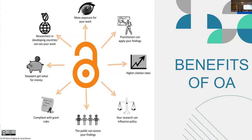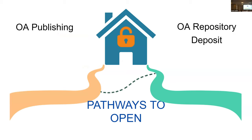Hopefully by now I've convinced you that open access is a good thing to participate in. There are two main pathways to make your work openly available: open access journal publishing and open access repository deposit. Even though these are depicted as separate routes, they're connected because you can do both — you can publish in an open access journal and then deposit that article into a repository like our institutional repository, Scholarly Commons. They're not mutually exclusive.